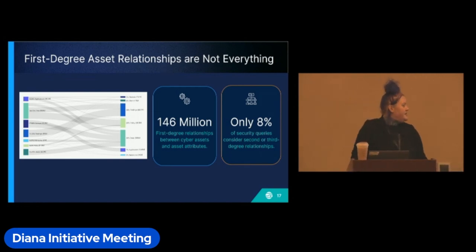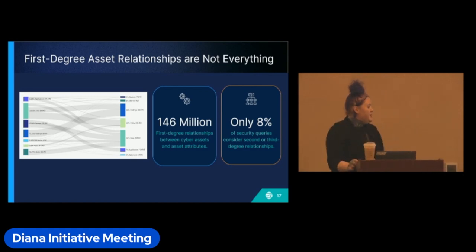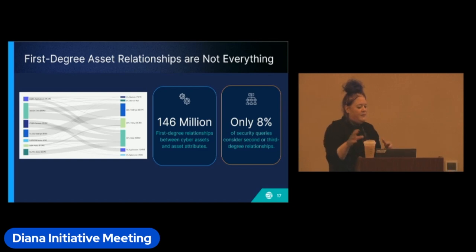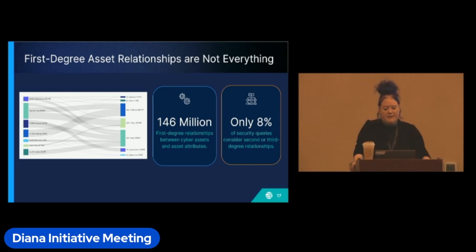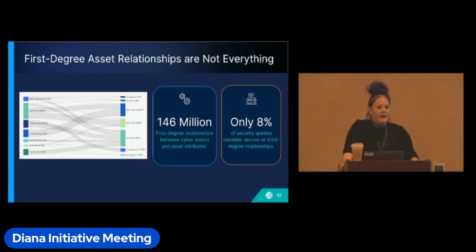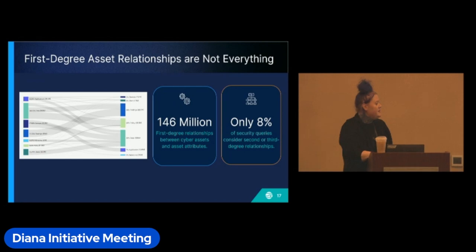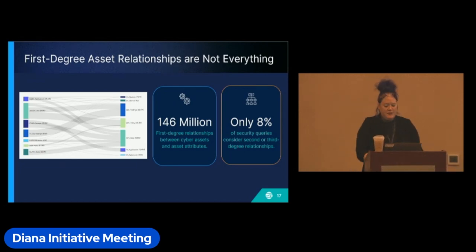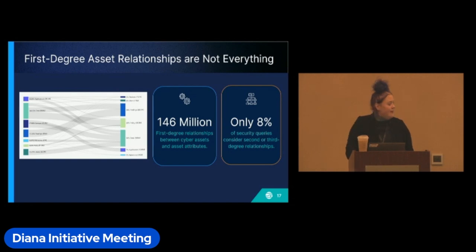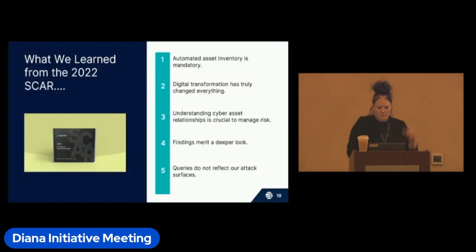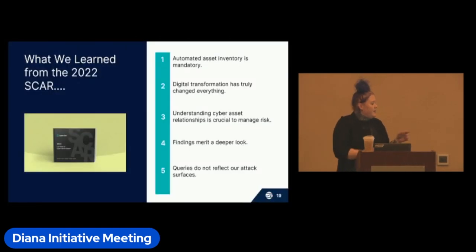I did some analysis of asset relationships to understand dependencies between assets, and I also looked at the way security practitioners at those 1,270 organizations were querying and measuring their security data. I discovered there are a lot of queries asking what they have, but not many queries to understand relationships — a pretty clear indicator that we're overwhelmed and don't have the time, bandwidth, or mental energy to look deeper into risks.